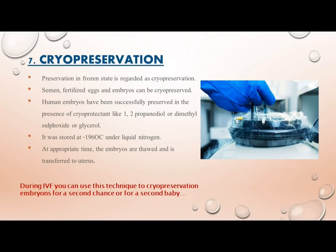Step 7 — Cryopreservation: preservation in a frozen state is referred to as cryopreservation. Semen, fertilized eggs, and embryos can all be cryopreserved. Human embryos have been successfully preserved using cryoprotectants such as 1,2-propanediol, dimethyl sulfoxide, or glycerol, stored at -196°C under liquid nitrogen. At the appropriate time, embryos are thawed and transferred to the uterus. This technique can be used during IVF to preserve embryos for a second attempt or a second baby.